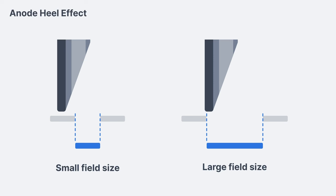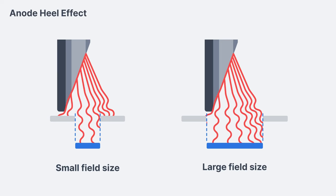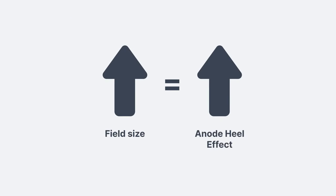The x-ray field size is one more factor that affects the severity of the anode heel effect. Increasing the field size increases the anode heel effect. Using a large field exposes the receptor to more of the low intensity beam on the anode side and more of the high intensity beam on the cathode side. This results in an increased difference in intensity across the x-ray field, which is the same as an increased anode heel effect. The relationship between field size and heel effect is direct — as the field size increases, the anode heel effect also increases.